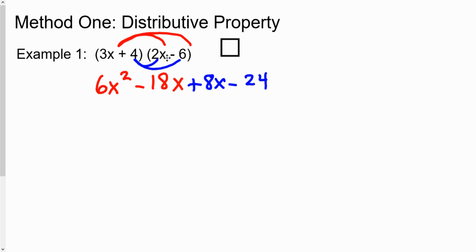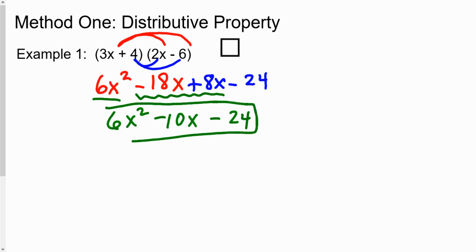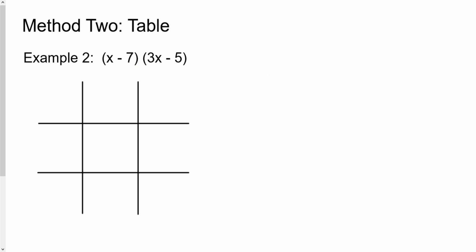You've now distributed both terms in the first binomial to each term in the second binomial. When the binomials are written in standard form, the middle two terms will be like terms. Negative 18x plus 8x is negative 10x. The first term, six x squared, and the last term, minus 24, are just written as-is. That's the distributive property method for multiplying two binomials.